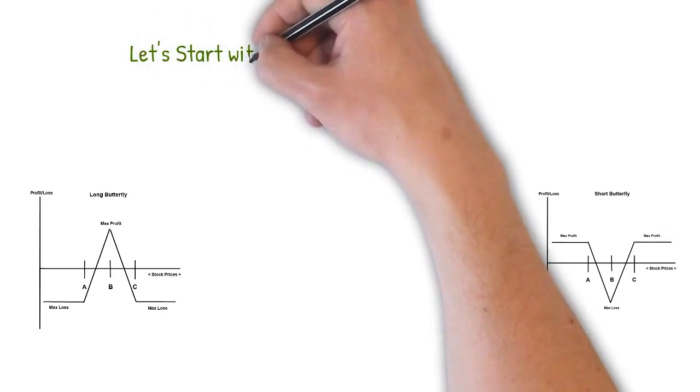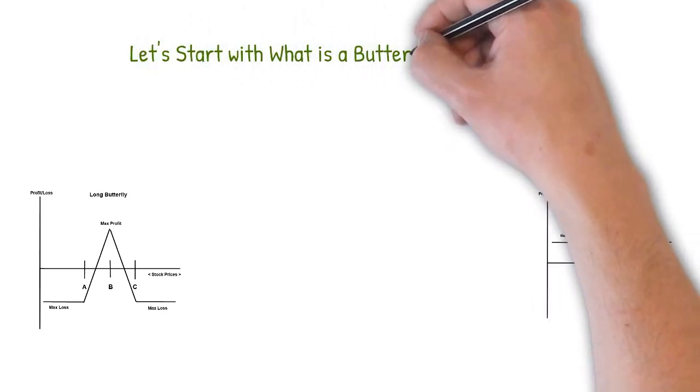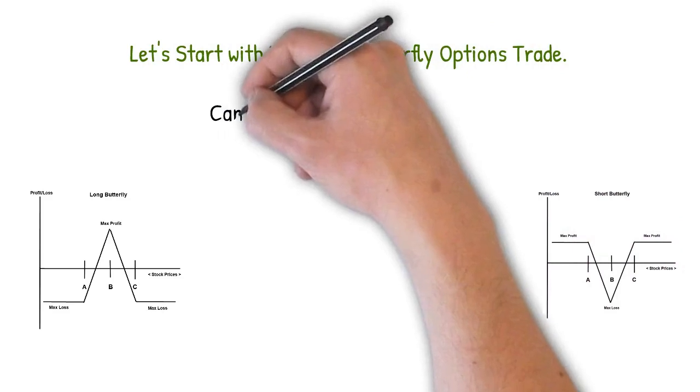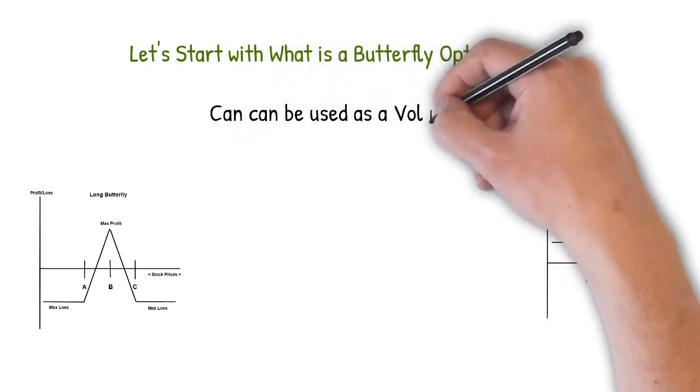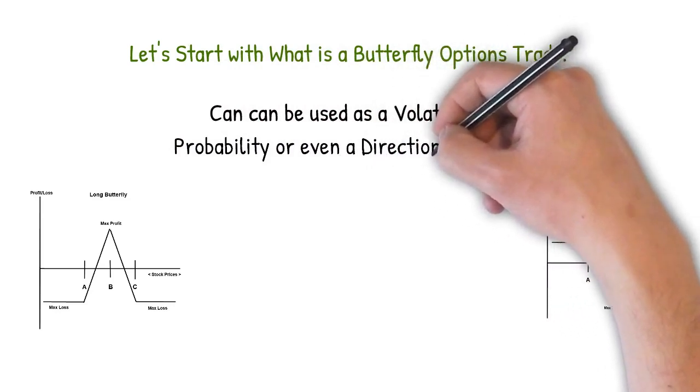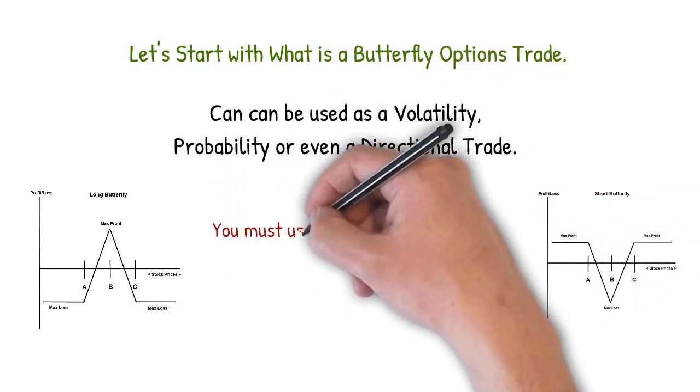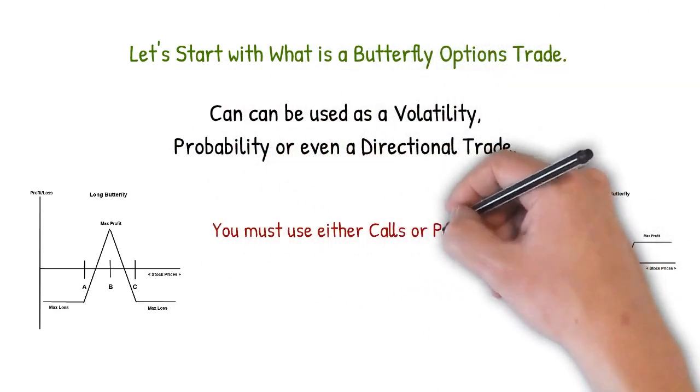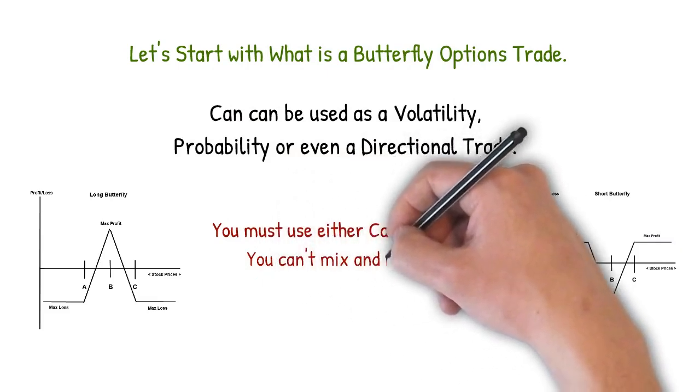We'll start with what is a butterfly options trade? First of all, they can be used as a volatility, probability, or even a directional trade. You must either use calls or puts. You can't mix and match in a butterfly trade. Take a look at the two graphics on the screen and you can get an idea of the risk profile of each, a long and a short butterfly.